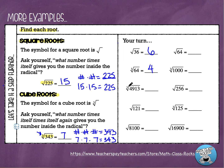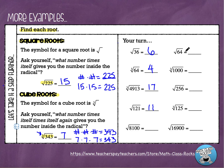The cube root of 4,913 is 17, because 17 times 17 times 17 is 4,913. The square root of 121 is 11. There's one problem that looks a little strange — we'll save that for the end.